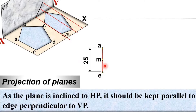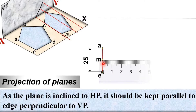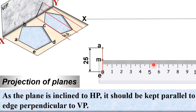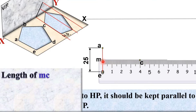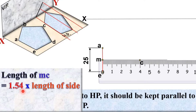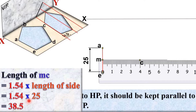First draw the vertical line AE which is 25 mm using the scale. Mark the midpoint of AE as M, then draw a perpendicular line to AE. On this perpendicular line you have to mark point C. The formula for the length MC is 1.54 multiplied by the length of the side. So 1.54 × 25 mm = 38.5 mm, approximately 39 mm.